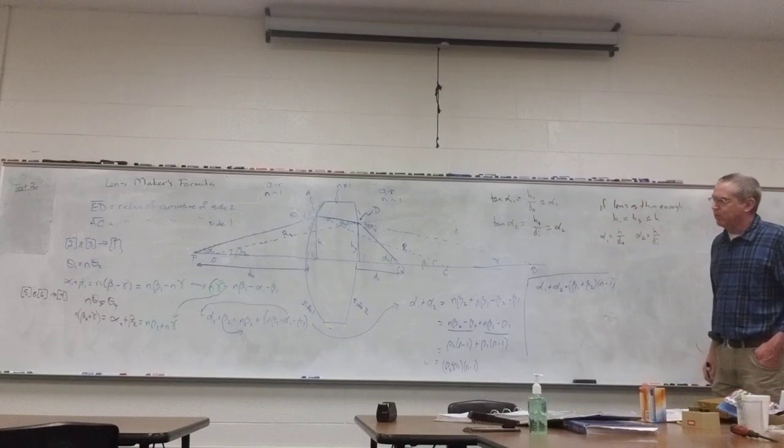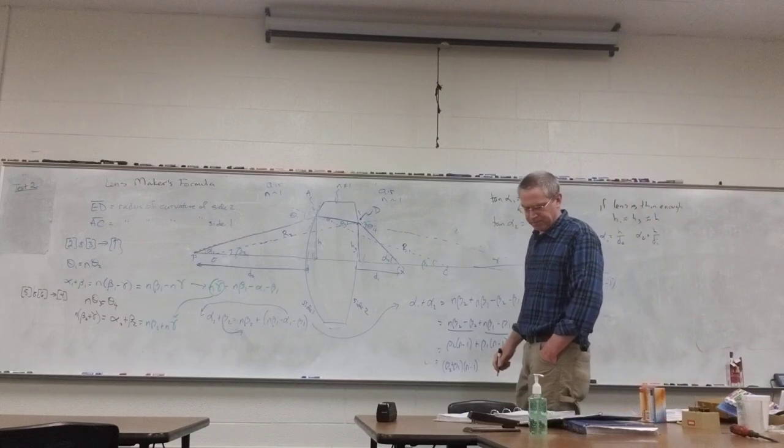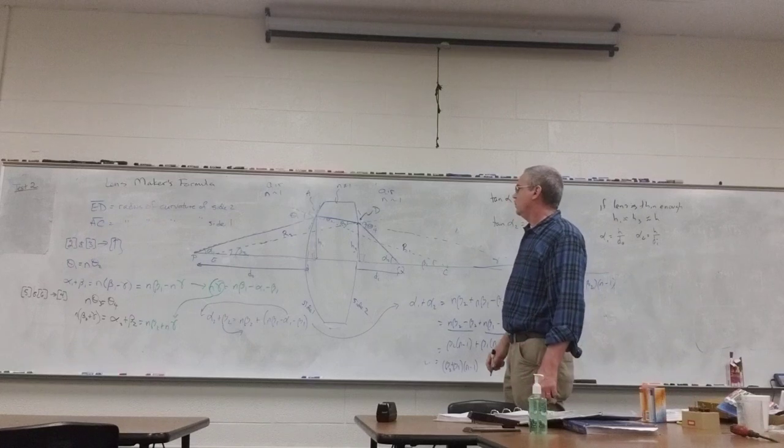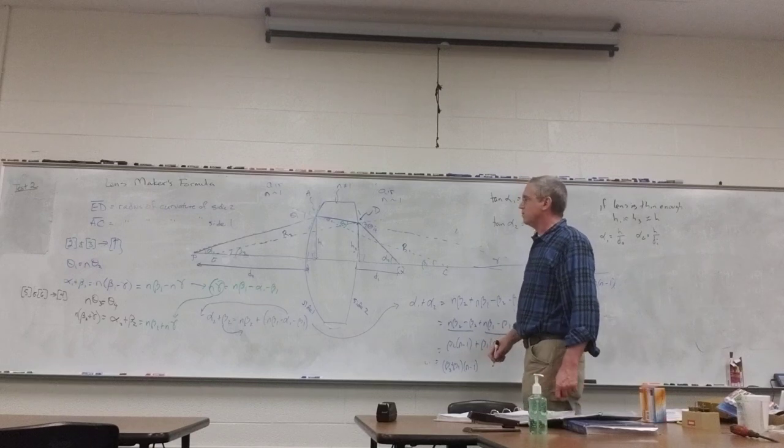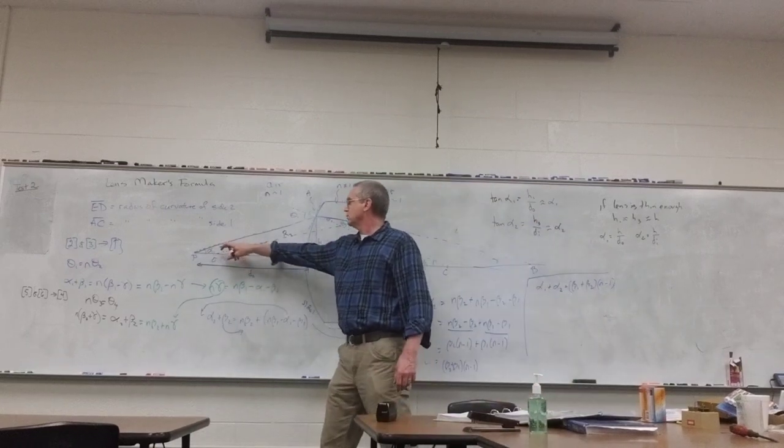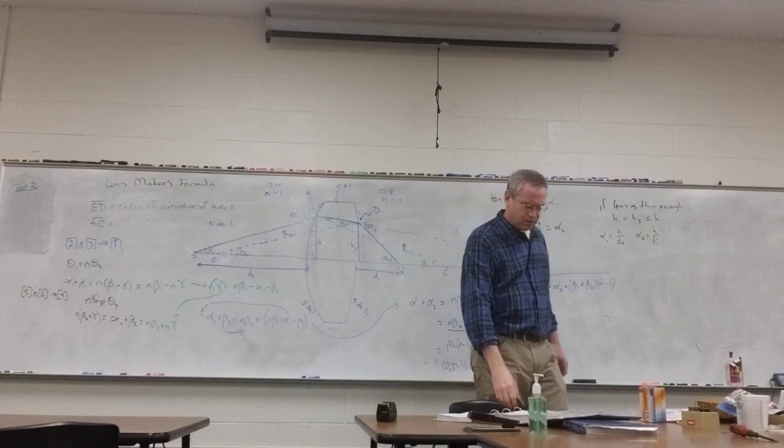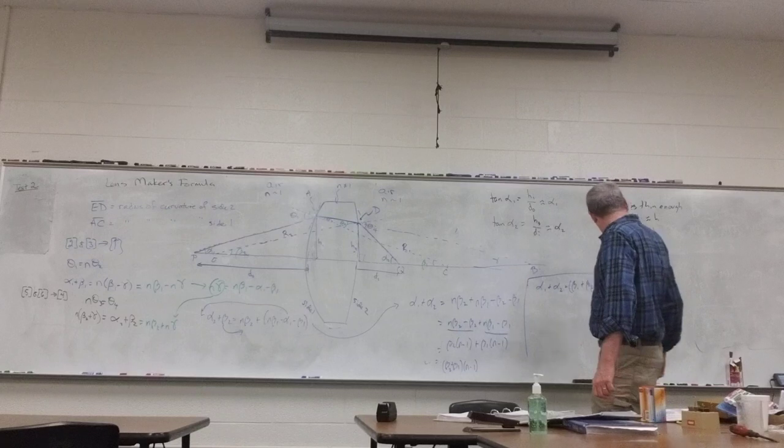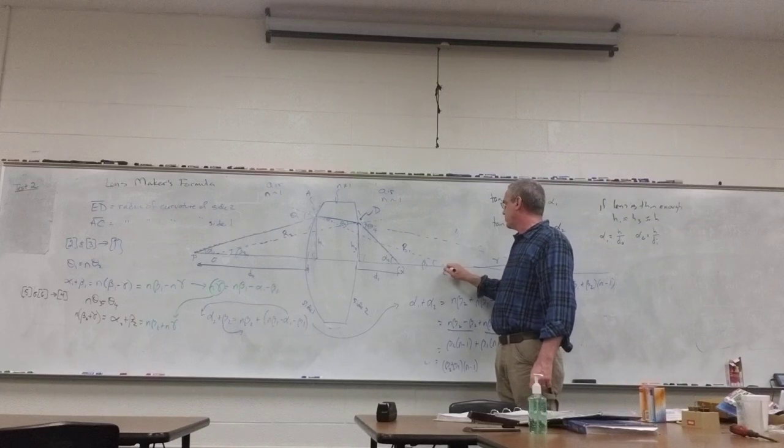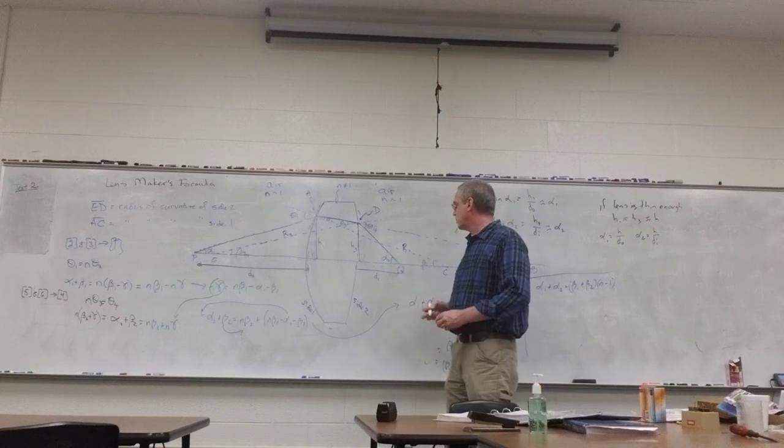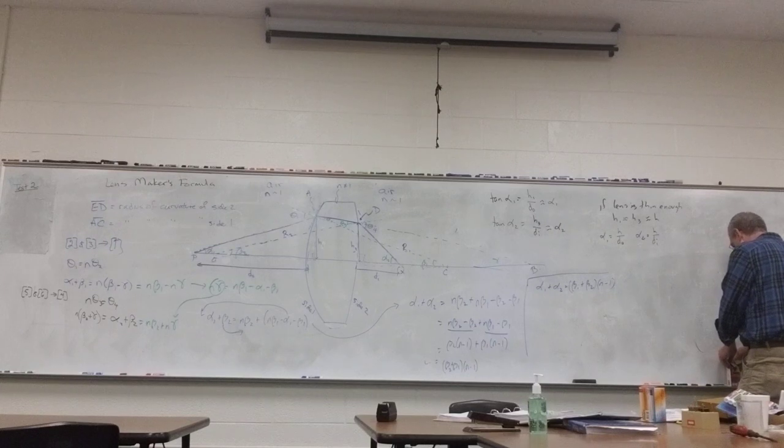We're going to do a similar process, except we need to somehow bring in the radii. So we did this pink triangle right here from P, A, and then right below it. I'm going to use that same leg, the height there. And this time I'm doing it from C.